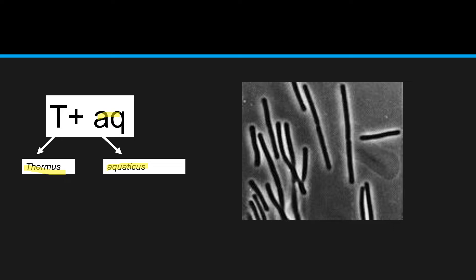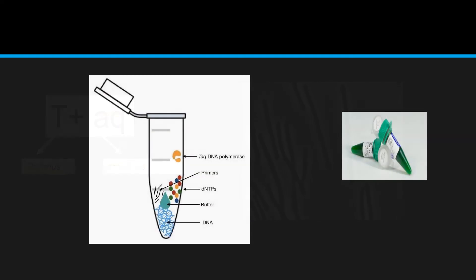TAQ Thermus aquaticus bacterium can survive in an environment which is having high temperature. Basically, this TAQ polymerase DNA polymerase is usually used in a technique which is termed as PCR, polymerase chain reaction, in which it functions. It extends the DNA fragment which I want to amplify.